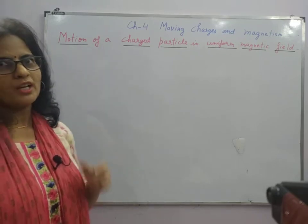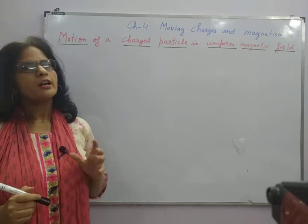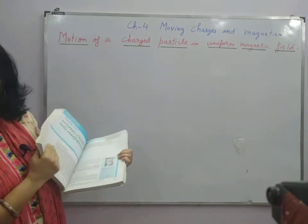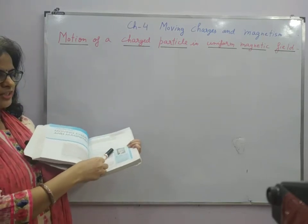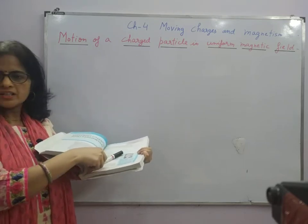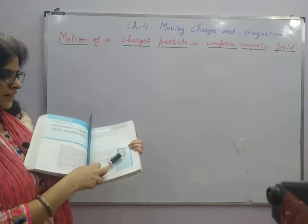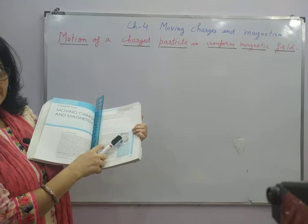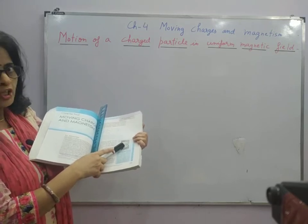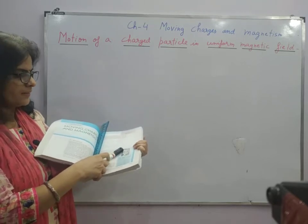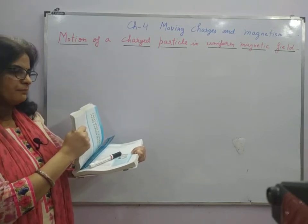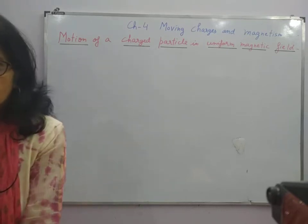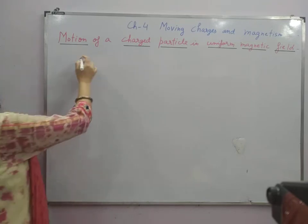We have already studied the formula for the magnetic force experienced by a charged particle. For understanding that, we had considered two planes which are mutually perpendicular to each other. We considered the direction of the charge moving with velocity v, and the direction of the magnetic field lying in the horizontal plane. If theta is the angle between the magnetic field and the direction of motion of the charge, then the magnetic force will be perpendicular to the plane containing velocity and the magnetic field.